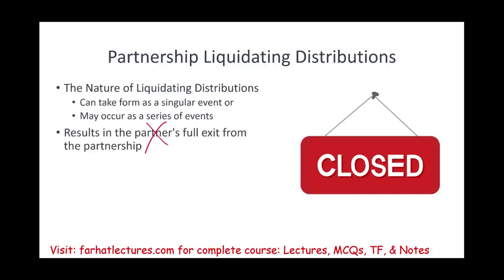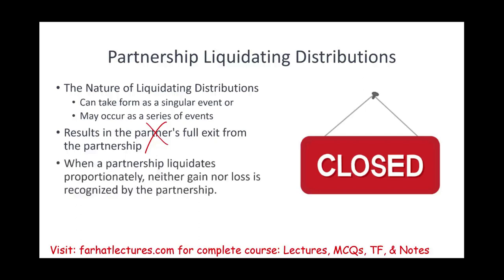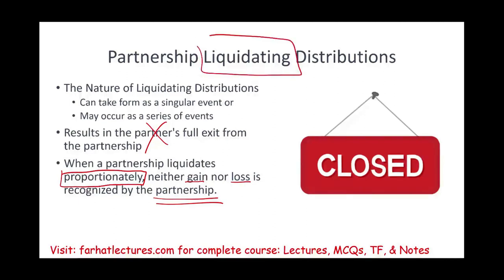The business is closed and the partner's full exit from the partnership is the end product. When the partnership liquidates proportionally — and remember we have proportional and disproportional — proportional means you're going to get exactly the value of your percentage ownership. Under those circumstances, no gain and no loss is recognized by the partnership. We will work a liquidating proportional distribution; it's similar to the non-liquidating distribution but not the same.